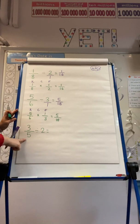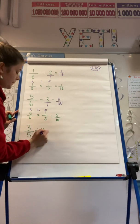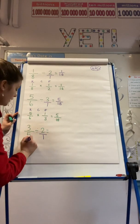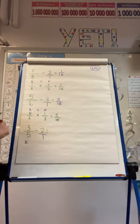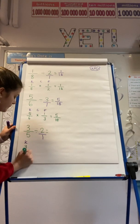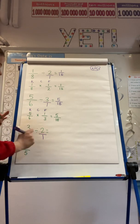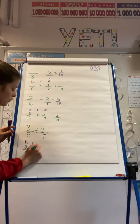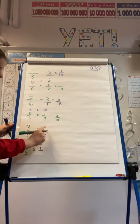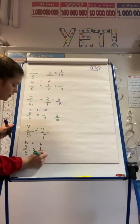Finally, we're going to look at 3 fifths divided by 2. So turn that integer into a fraction. You keep your original, which in this case is 3 fifths. I change my operation, so it's going to become multiplication. And I flip my final fraction. So my denominator becomes my numerator, and my numerator becomes my denominator.